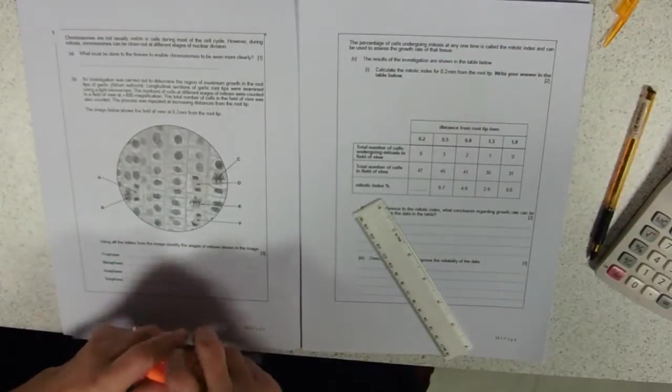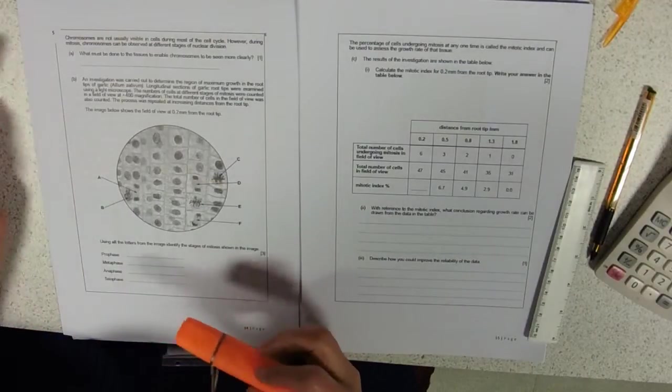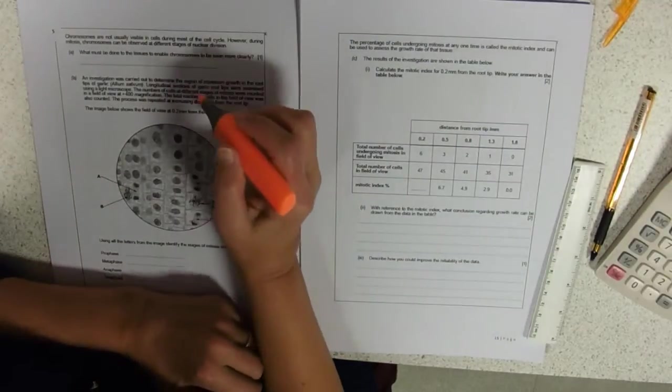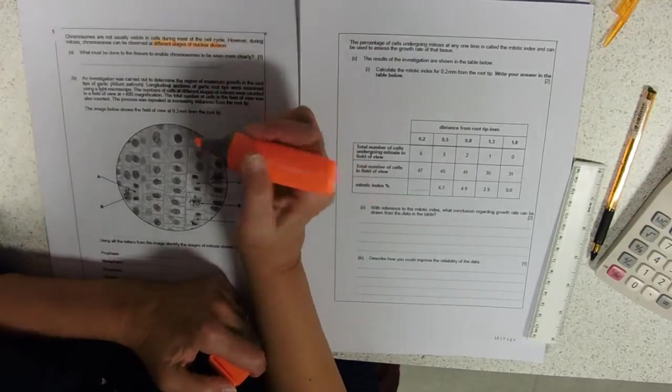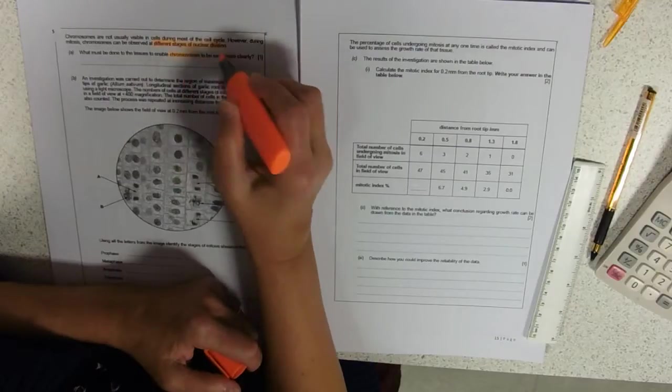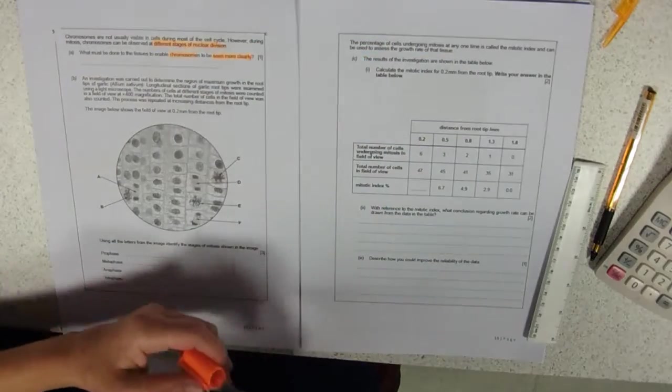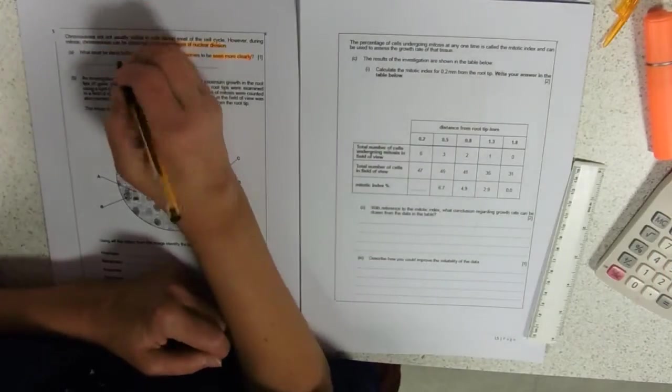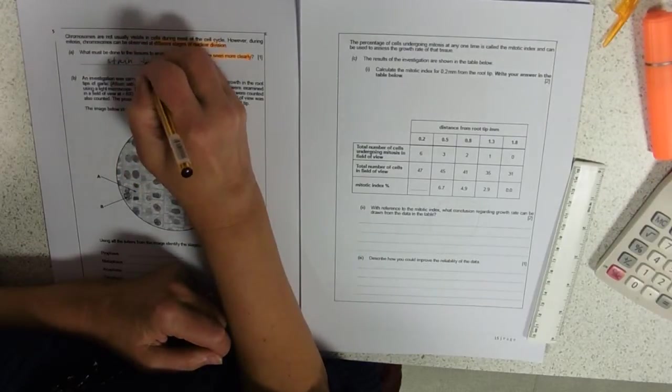It tells us that chromosomes are not usually visible in cells during most of the cell cycle. However, during mitosis, chromosomes can be observed at different stages of nuclear division. What must be done to the tissues to enable chromosomes to be seen more clearly? So if you think back to when we did this experiment,